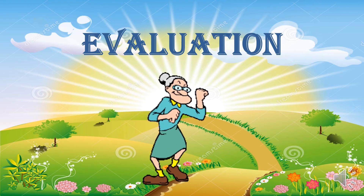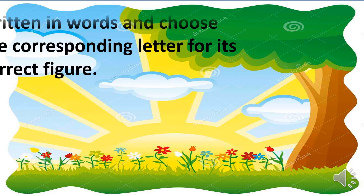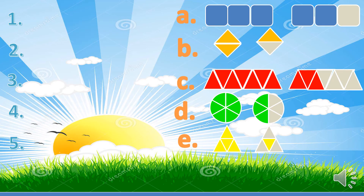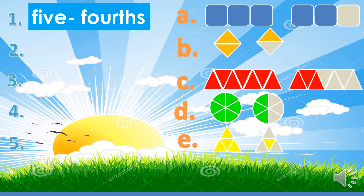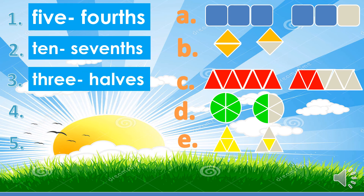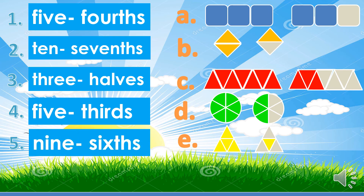Let us see if you understand the lesson. Read the fractions written in words and choose the corresponding letter for each correct figure. Number one: five-fourths. Number two: ten-sevenths. Number three: three-halves. Number four: five-thirds. And number five: nine-sixths.